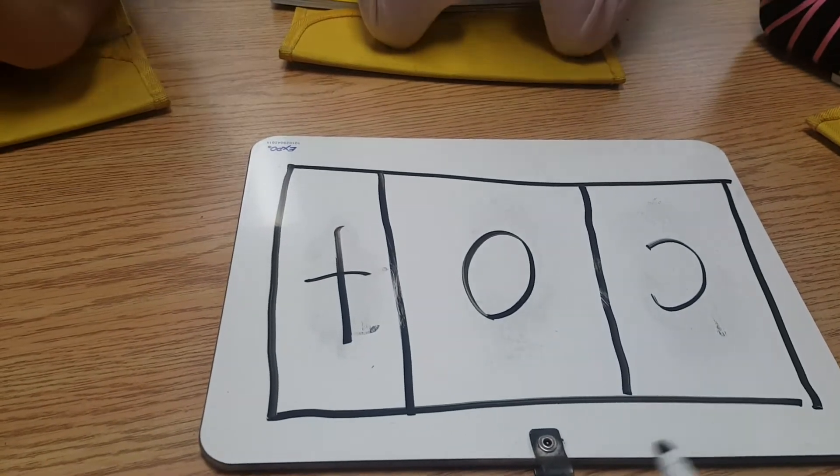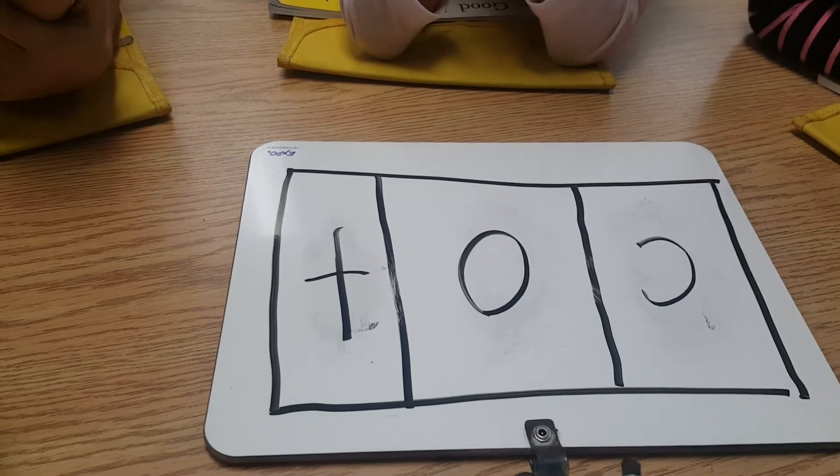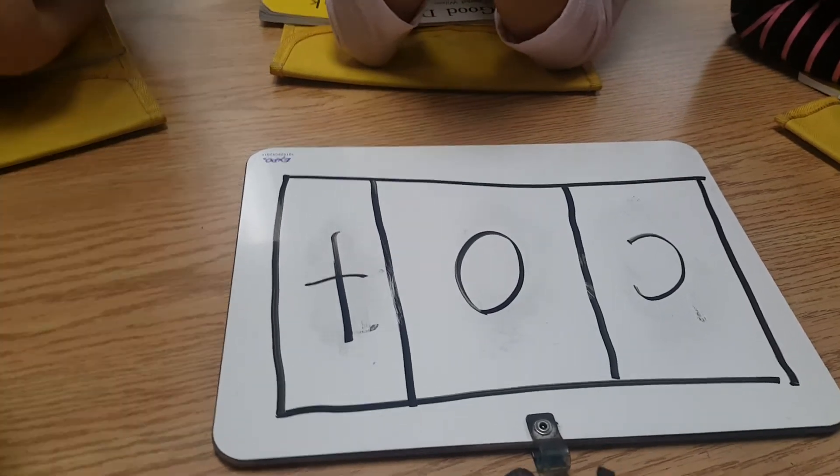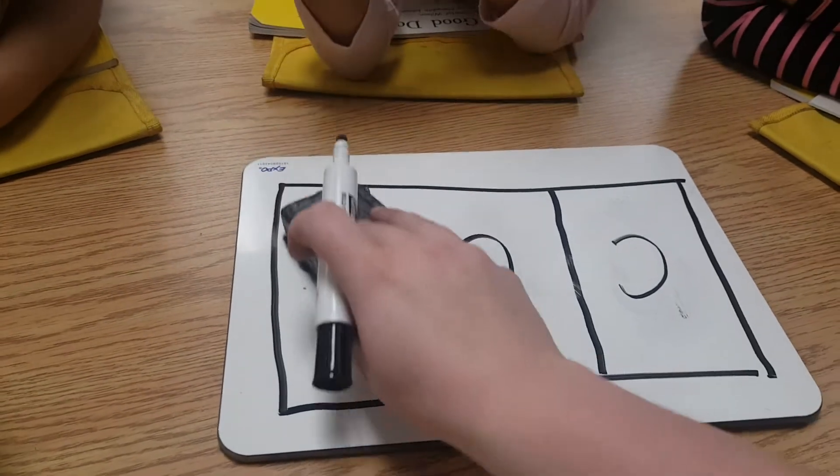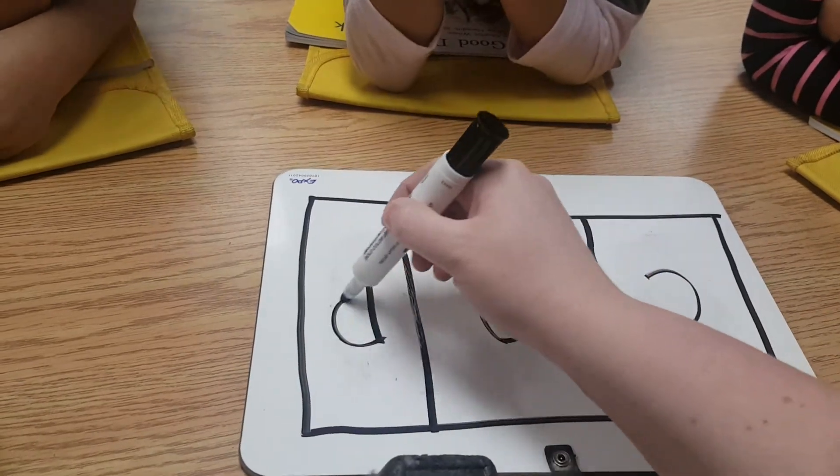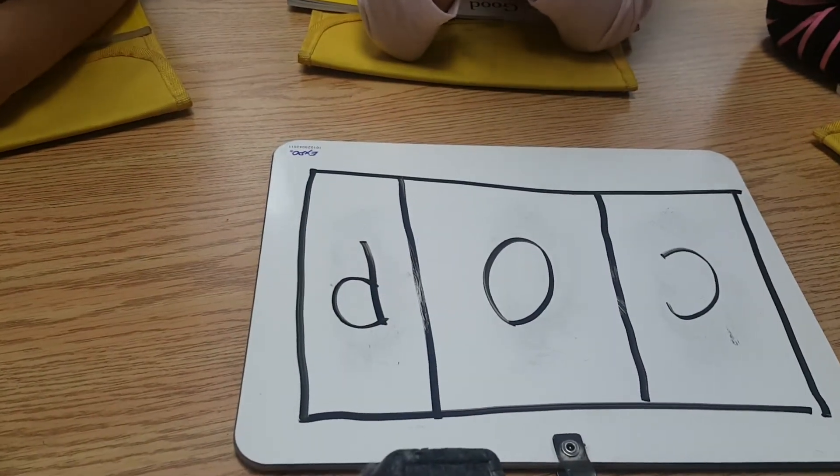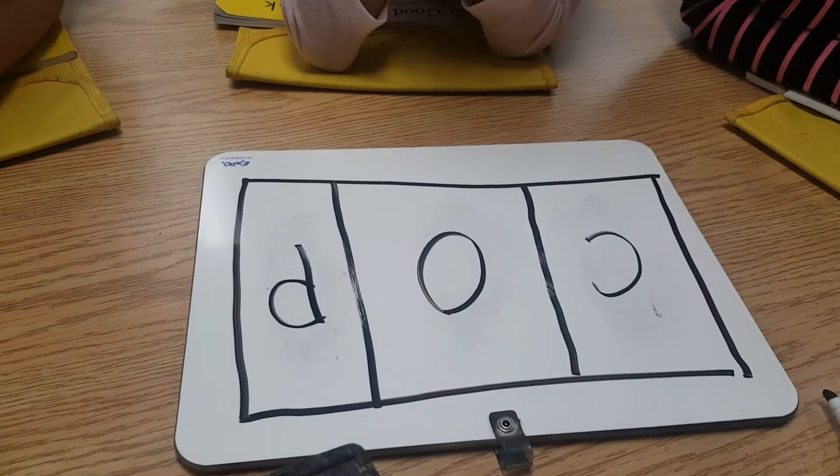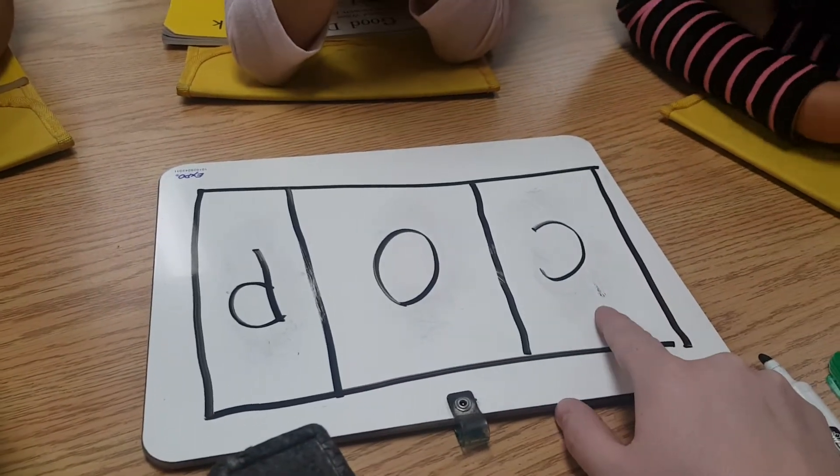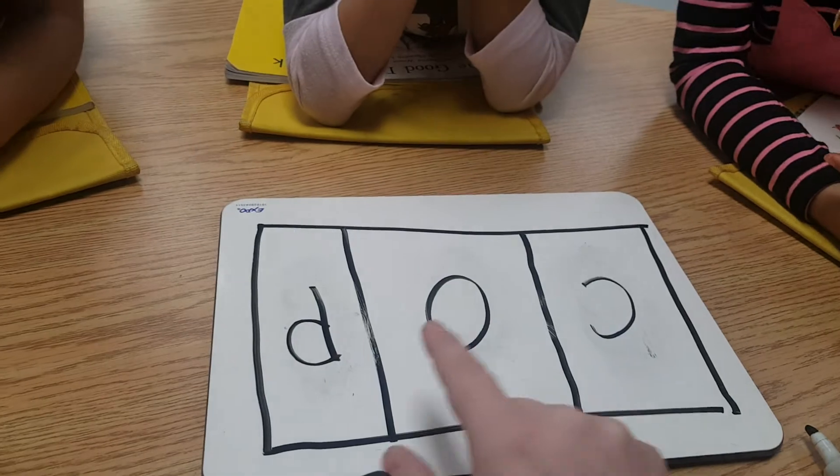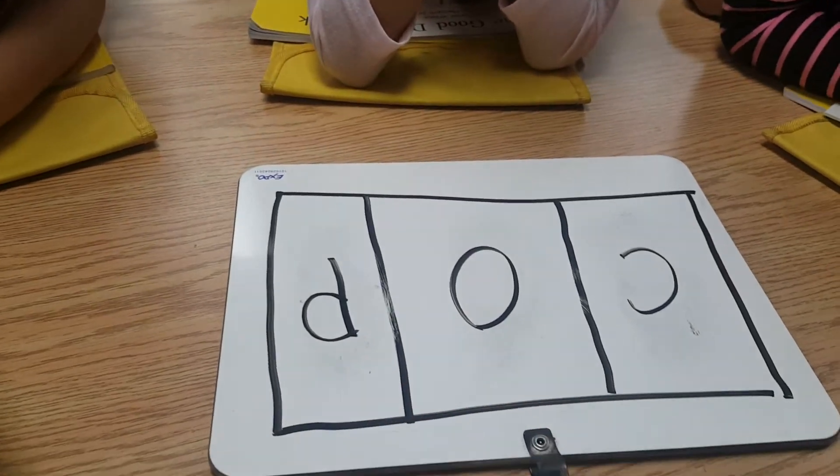Now, Victoria, change cot to cop. Change the T to a P. Very good. All of these words are consonant, vowel, consonant words. All we did was change the beginning sound or the middle sound or the ending sound. Very good.